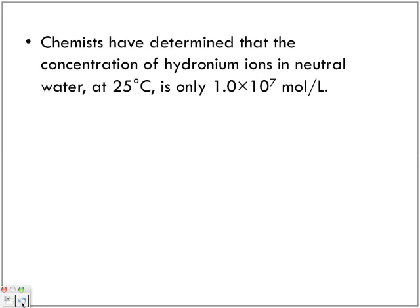Chemists have determined that the concentration of hydronium ions in neutral water at 25 degrees Celsius is only 1.0 times 10 to the negative 7 moles per liter. So that is the typical concentration of the hydronium ion in pure water.